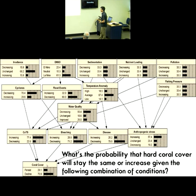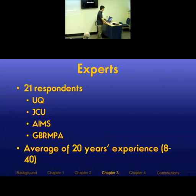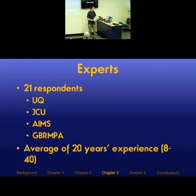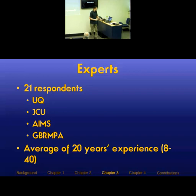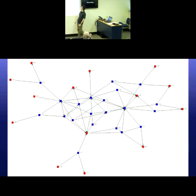Crown-of-thorns outbreaks, bleaching, and disease all affect the bottom line: the probability that coral cover will stay the same or increase given the following combination of conditions. For each possible state of each box I'm asking the experts how likely that combination is to cause a decline in coral cover. The expert pool consisted of 21 respondents from the University of Queensland, James Cook University, the Australian Institute of Marine Science, the Great Barrier Reef Marine Park Authority, plus a few independent researchers — with average experience of 20 years, ranging between 8 and 40.